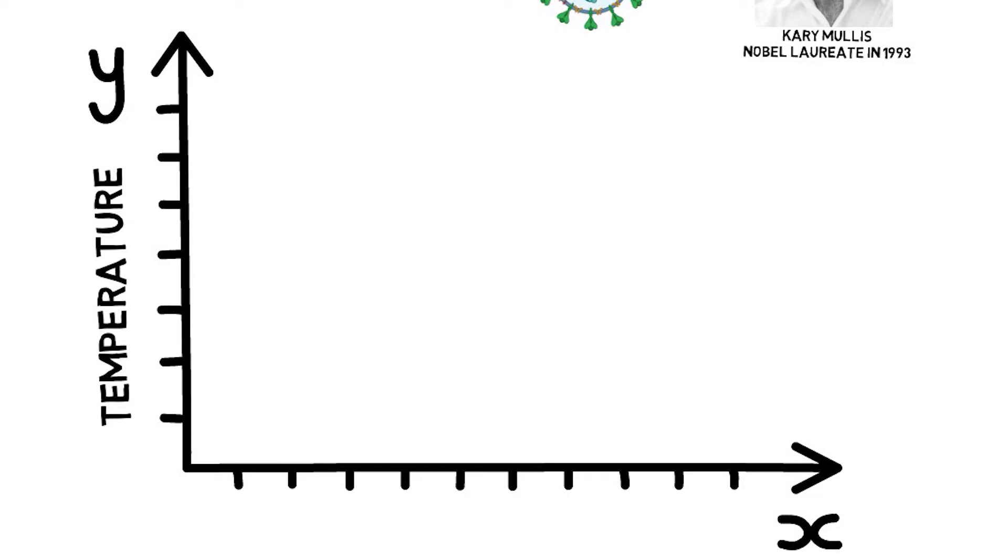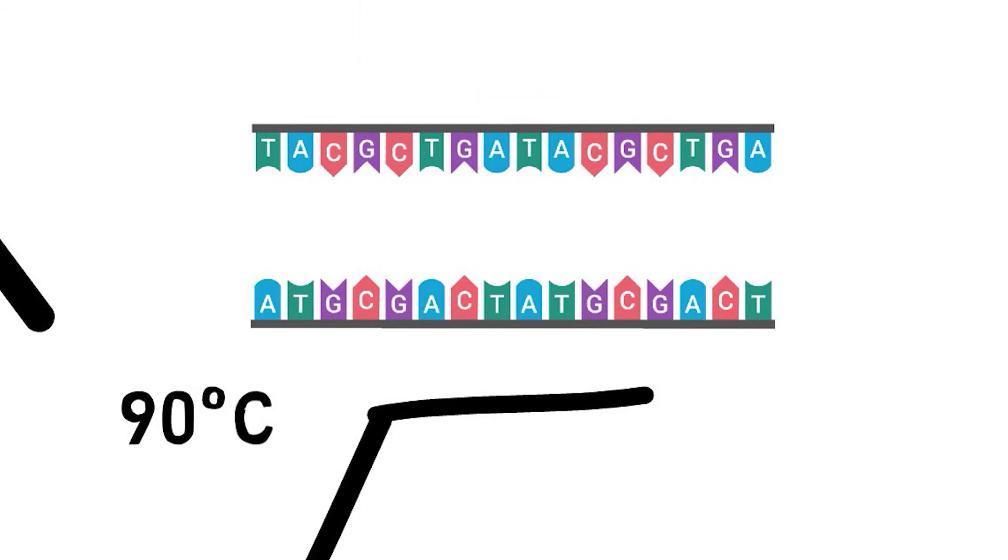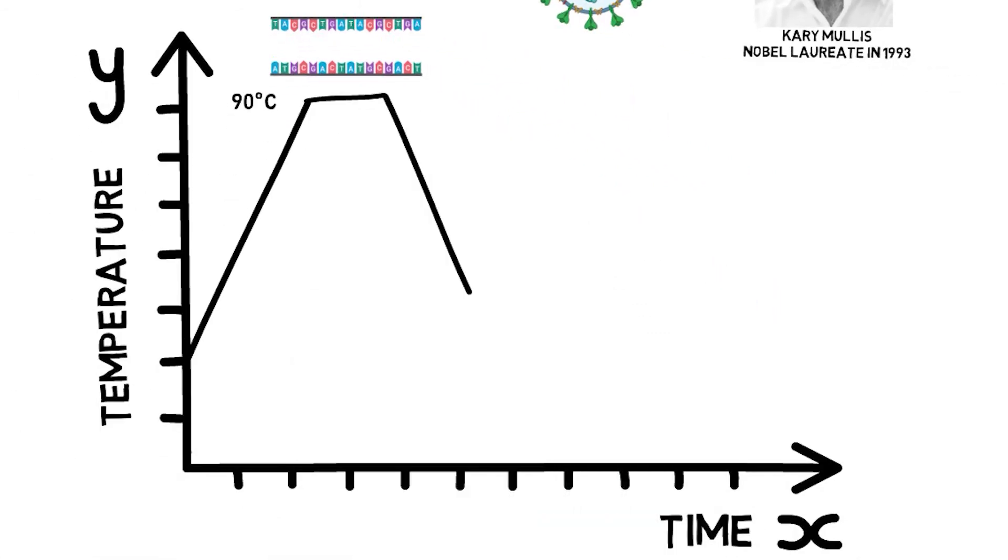To get this molecular engine to work, temperature is vital, and a machine called thermocycler is needed. In the first step, the thermocycler increases temperature up to 90 degrees Celsius in order to open the double helix, creating the so-called single-strand DNA.